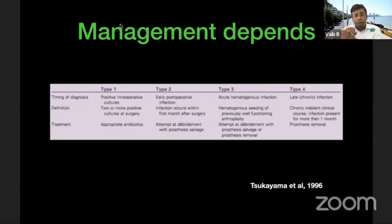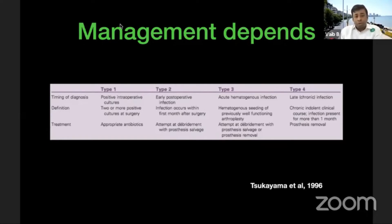Management depends primarily on timing of diagnosis. The Tsukayama classification describes Type 1 to Type 4. Type 1: positive intraoperative cultures — two or more — treated with appropriate antibiotics. Type 2: early post-operative infection within the first month, though for the hip some consider up to three months, treated with debridement and prosthesis salvage. Type 3: acute hematogenous infection via seeding of a previously well-functioning arthroplasty — debridement with prosthesis salvage or one-stage revision may be considered. Type 4: late or chronic infection occurring over time.